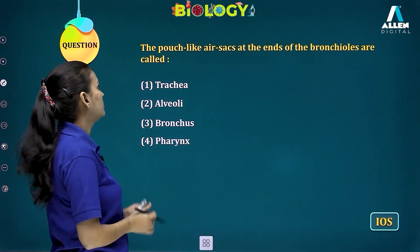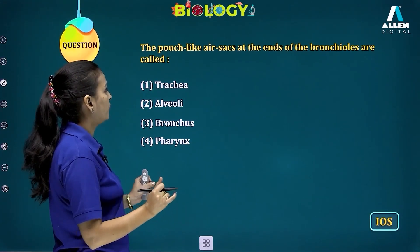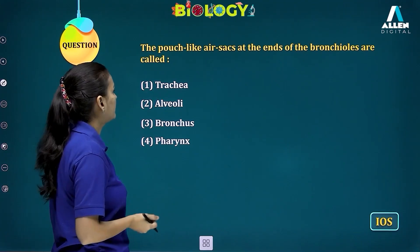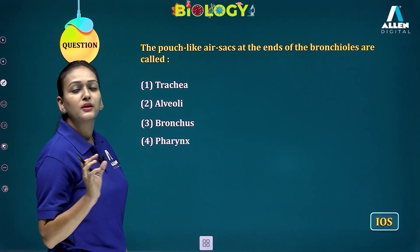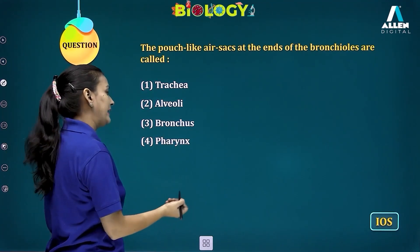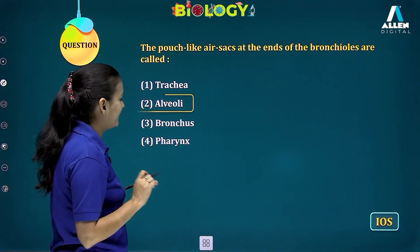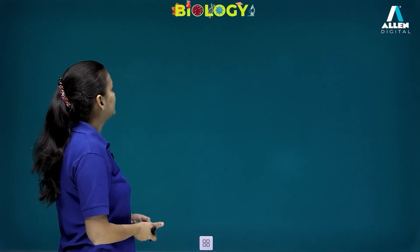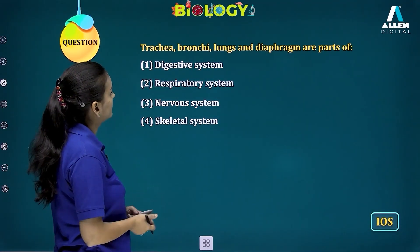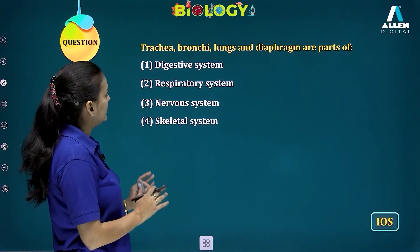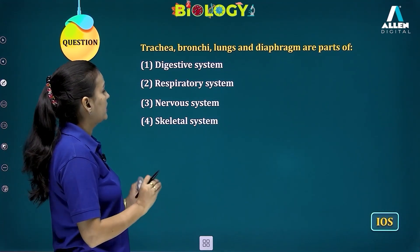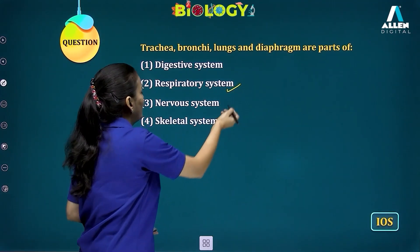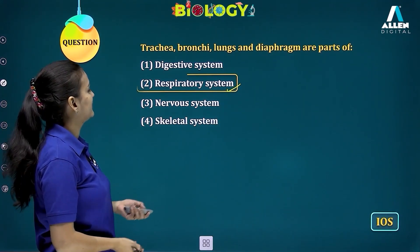Another IOS-based question: pouch-like air sacs at the end of bronchioles — what are they called? The answer is alveoli. Trachea are tubes, bronchus and pharynx cannot be the answer. The answer is alveoli. Also: trachea, bronchi, lungs, and diaphragm are part of the respiratory system — not the digestive, nervous, or skeletal system.